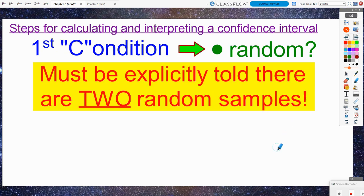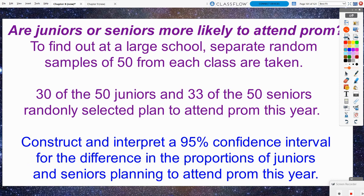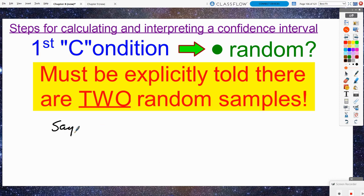First for the random, instead of there just being one random sample, you have to be told that there are two random samples specifically. We're going to use our example here. Were there two random samples? I don't know, let me go back and reread the information. Separate random samples of 50 from each class are taken. So I would say and then I would just quote exactly what the problem stated. That way, if you directly quote what the problem says, there's no misinterpretation of what you meant and what you thought the problem meant.